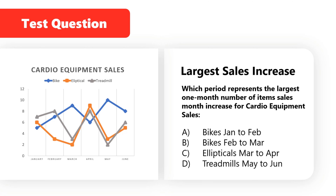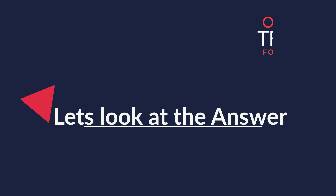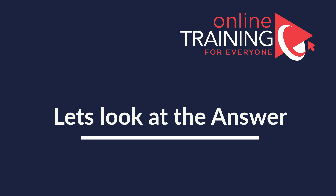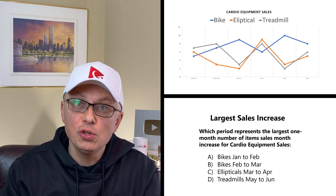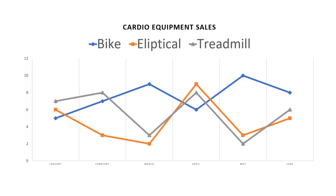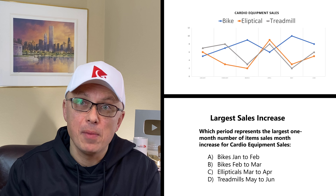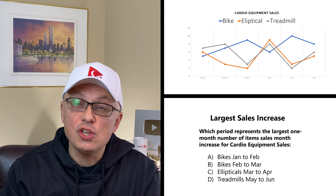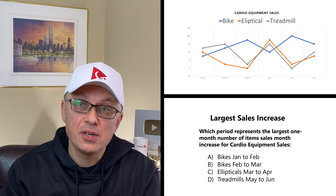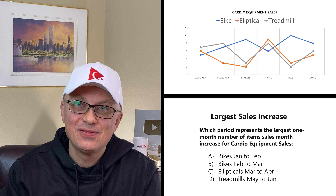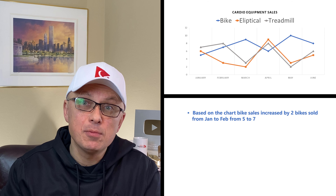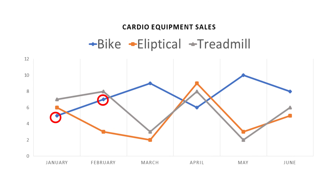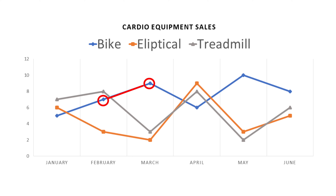To answer this question, we need to look at the graph closely. For each data point we determine the actual value, and then look at the differences month to month. Based on the chart, bike sales increased by two from January to February — from five to seven items — and also increased by two from February to March, going from seven to nine.